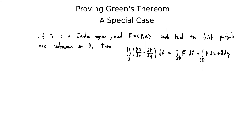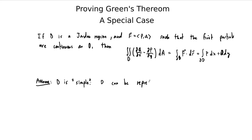We'd like to prove this theorem for at least a special case. The special case is the following: for the sake of this video only — Green's theorem holds for more general regions than we've stated — let's assume that D is what our textbook calls a simple region. Simple has a couple different technical definitions already, and the book is adding another one, so I'll just say this is a special case. D is simple means that D can be represented as either a type 1 or a type 2 region, or as both.